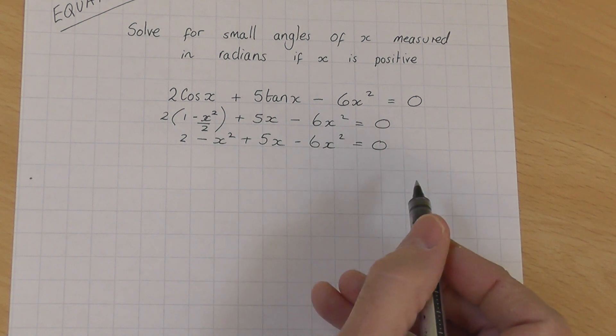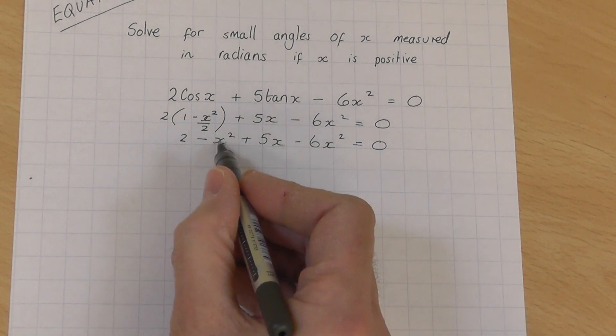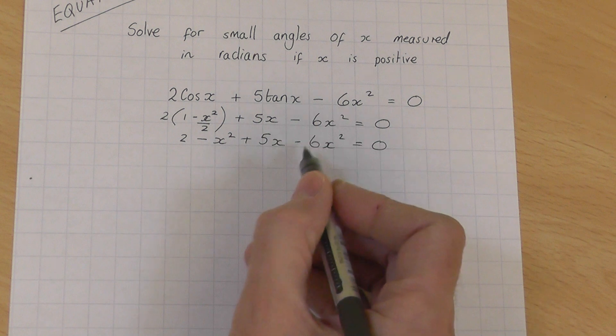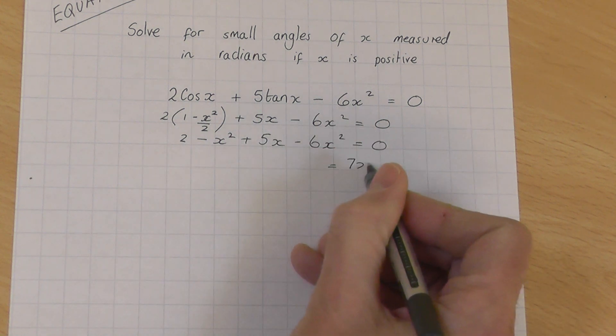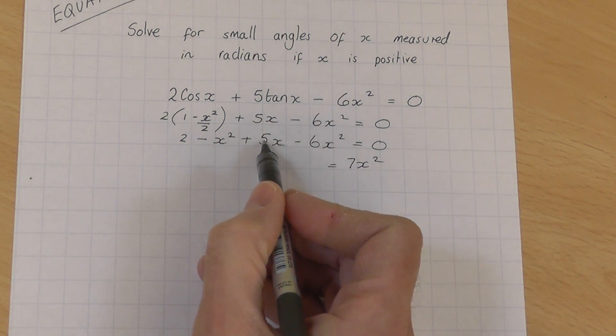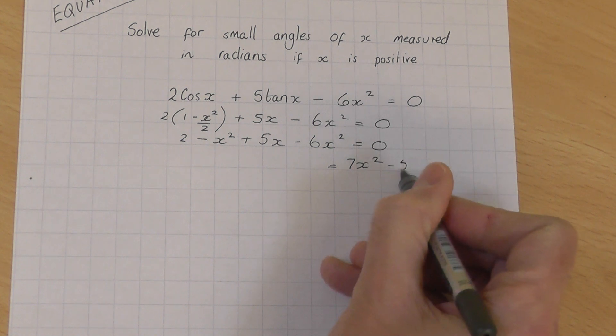Let's now collect the x squareds on one side. Minus 1 minus 6, that's minus 7. Take it to the right, you get 7x squared on the right, plus 5x, take it over, you get minus 5x.